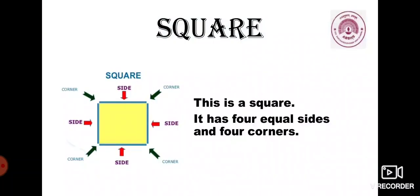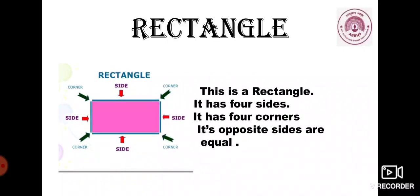The first one is square. It has 4 equal sides and 4 corners. This is a rectangle. It also has 4 sides and 4 corners, but its opposite sides are equal.